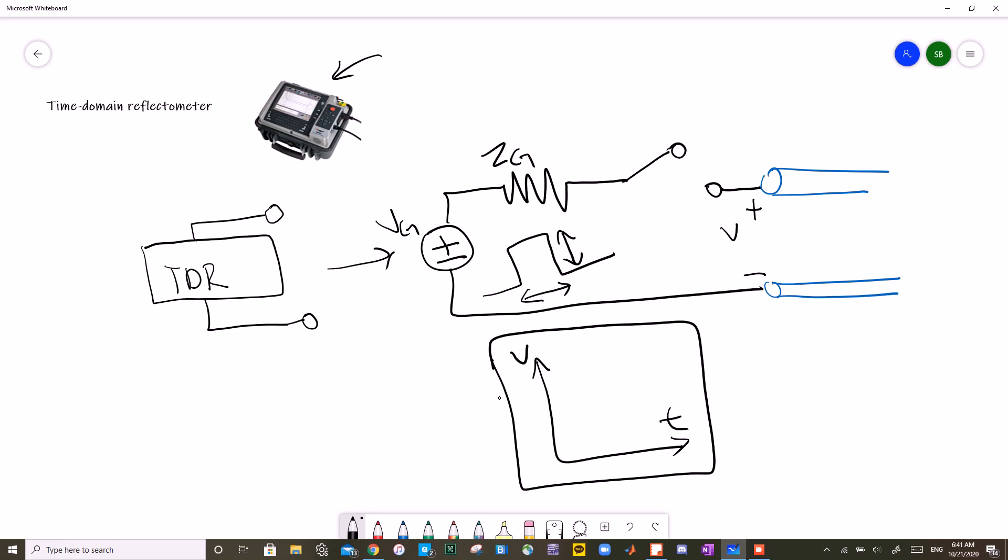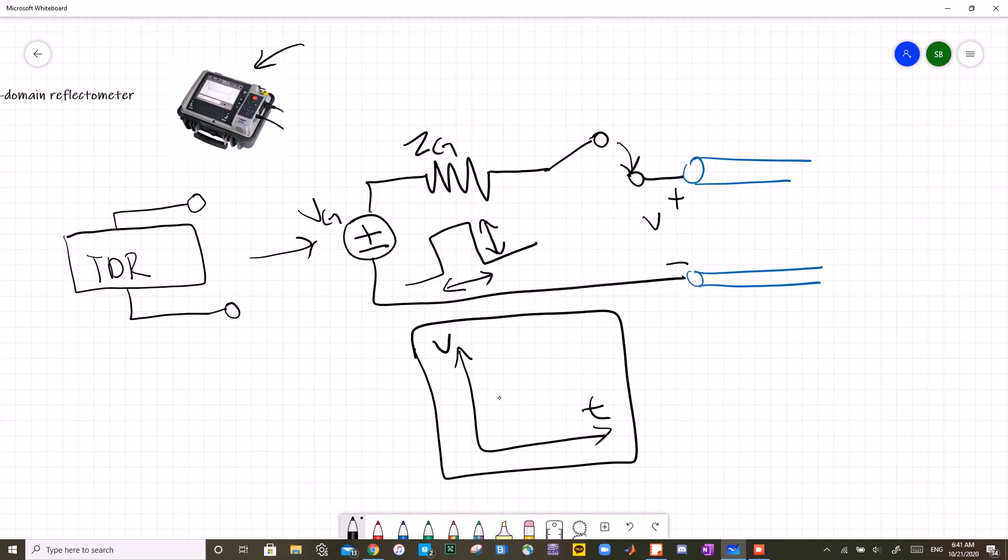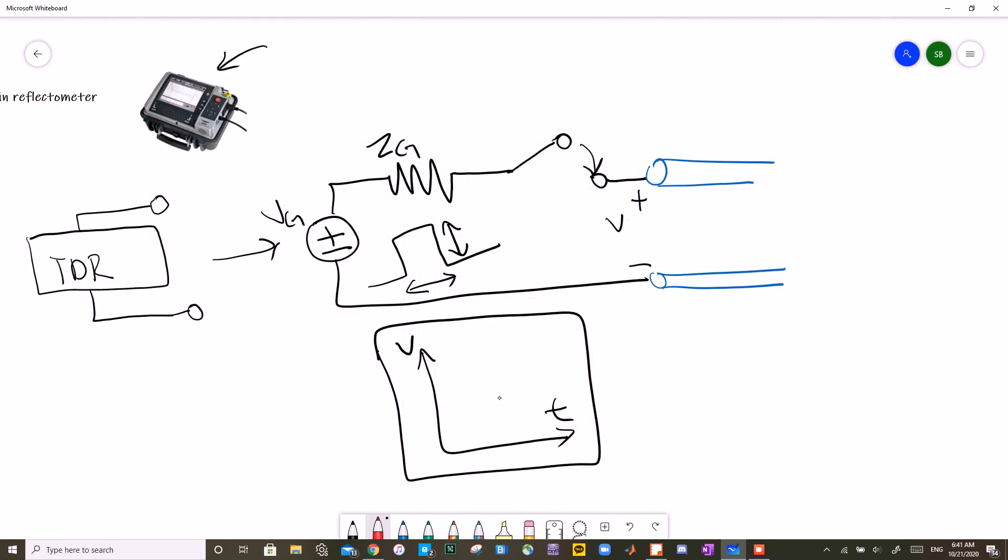Now when that switch closes, the DC wave will travel back and forth inside the transmission line until it reaches steady state. Then, you can look at your display, adjust the axes accordingly, and find out the type of the fault and the location of it.